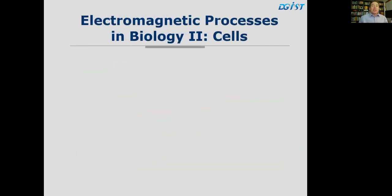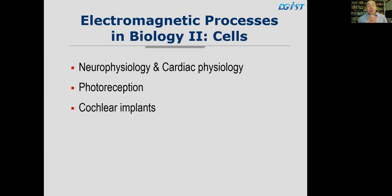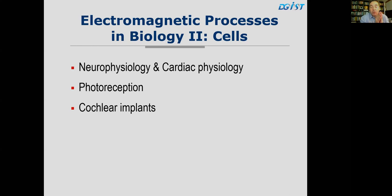We will now start with electromagnetic processes in cells, covering neurophysiology, cardiac physiology, photoreception, and cochlear implants — how the ear can hear with devices.